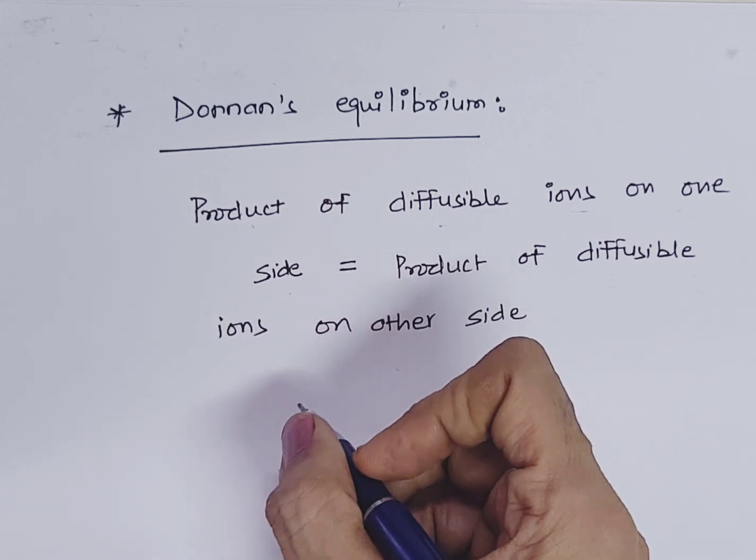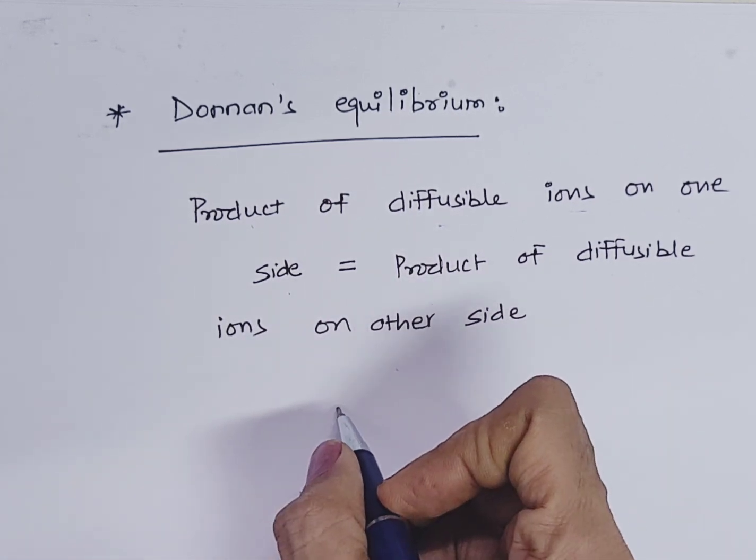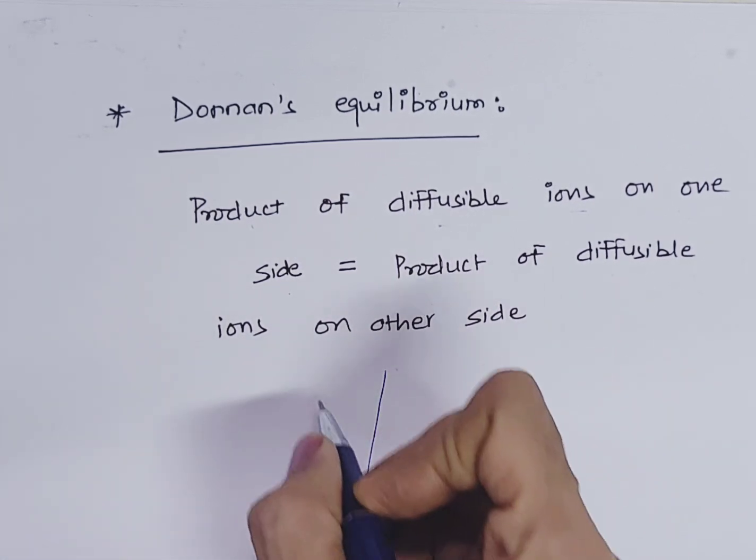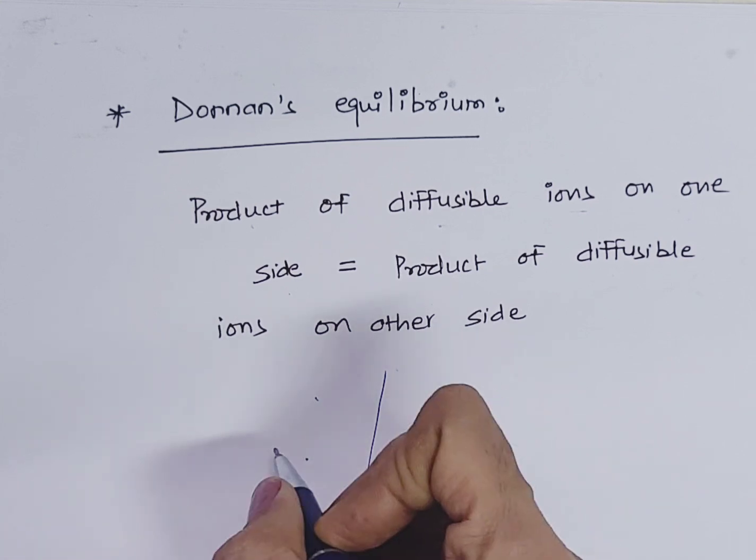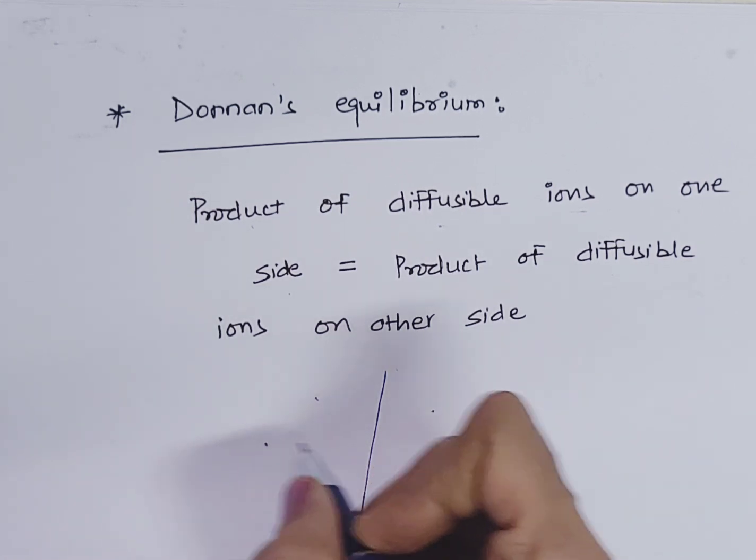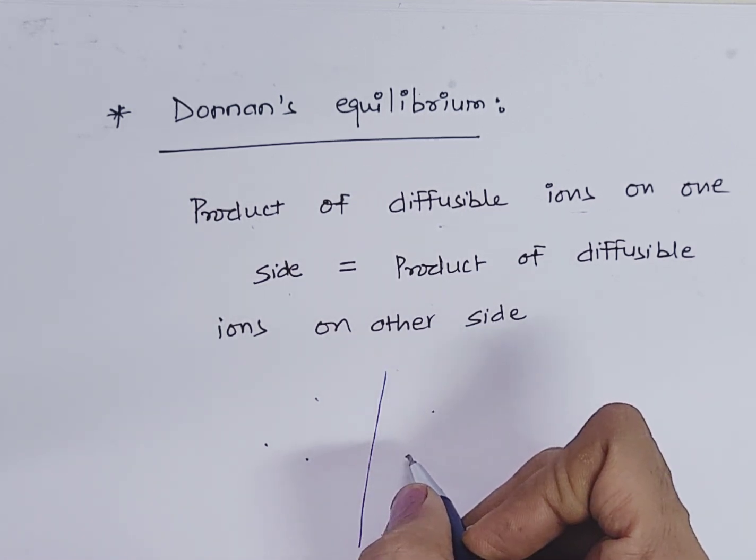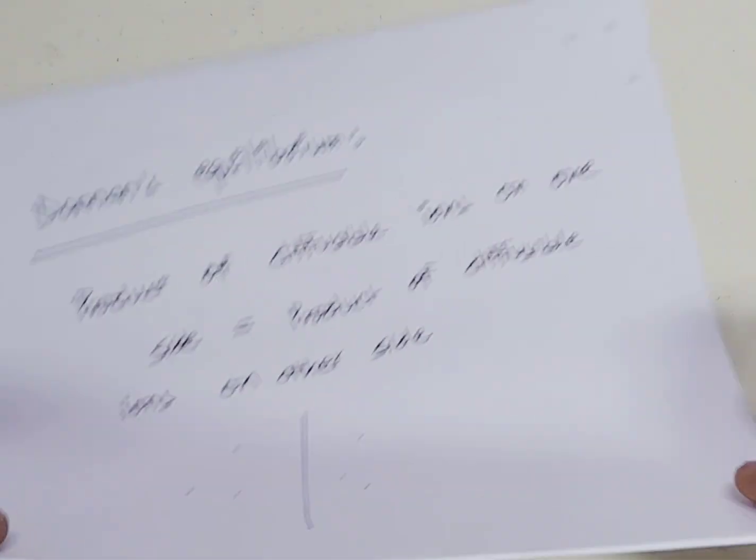And this is when two ionized solutions are separated by a semi-permeable membrane. So, product of diffusible ions on one side is equal to product on the other side. First of all, let us discuss with the help of an example.